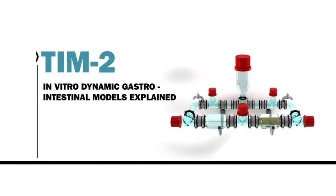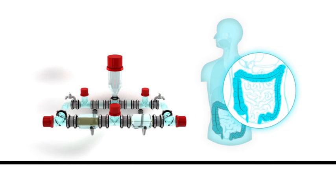The TIM 2 represents the large intestine or the colon. This part of the intestine contains a high density of many bacterial species, the microbiota.